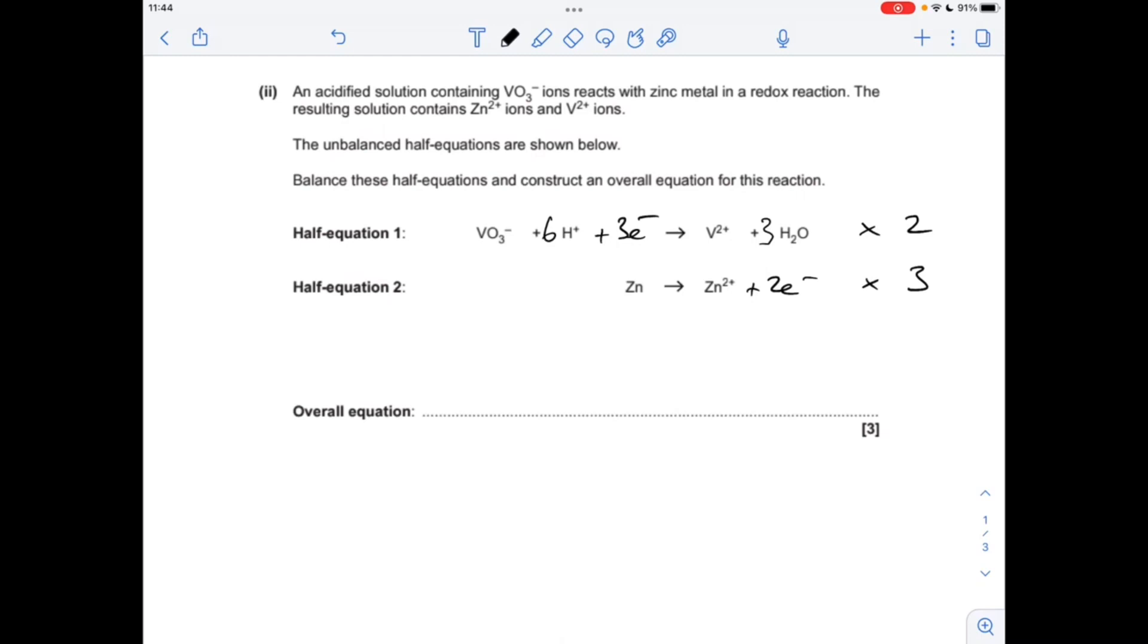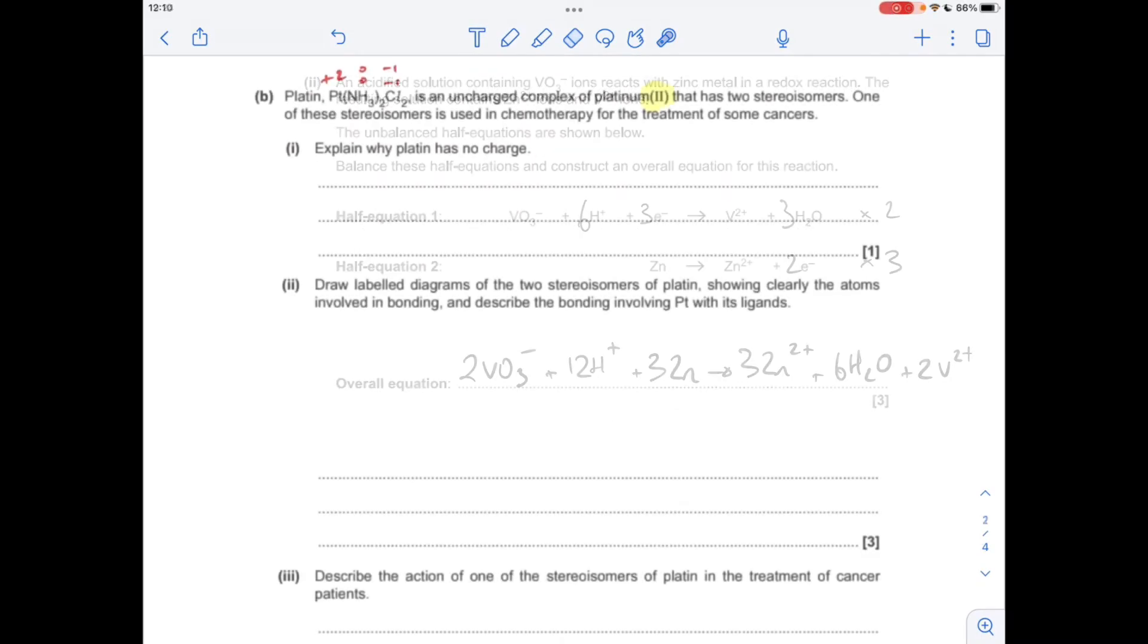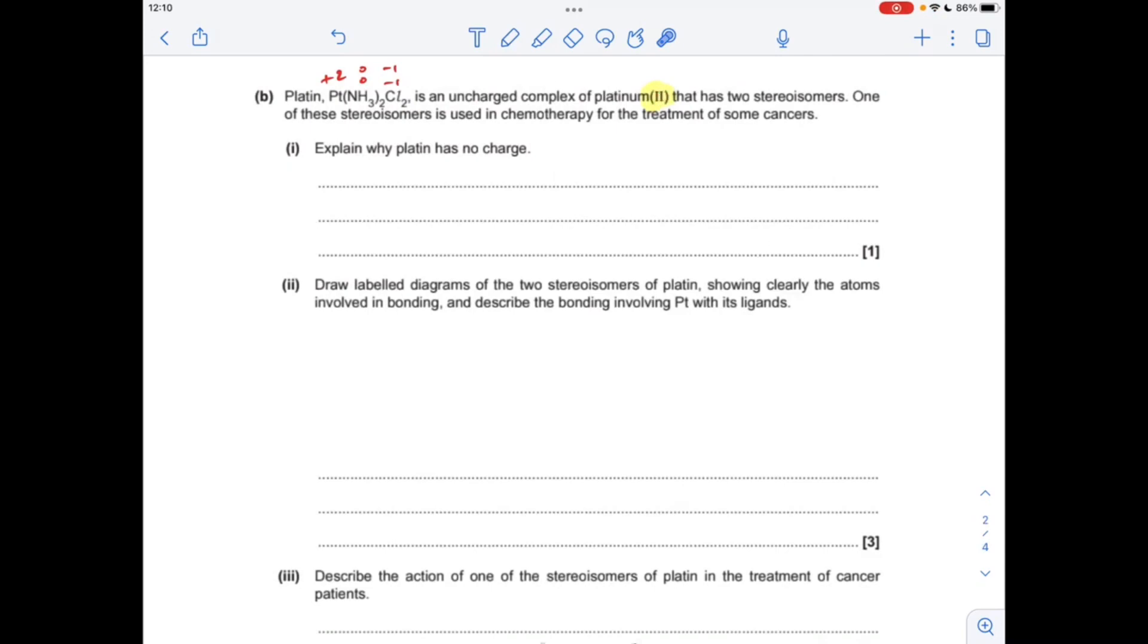Part B, now about platinum. You'll notice I've highlighted the Roman two there, so that's telling us that the platinum is in its +2 oxidation state. The two ammonias don't have any charge, they're neutral, and these two chloride ligands are -1 each. You can see that these charges are going to balance each other out, so no overall charge.